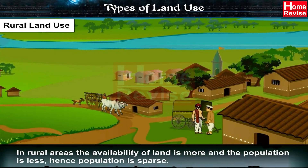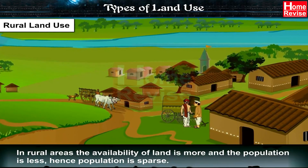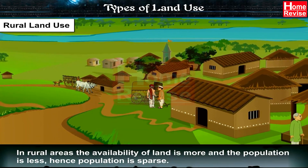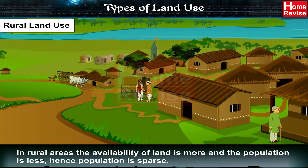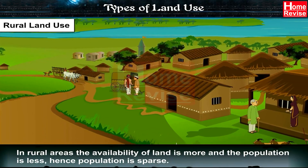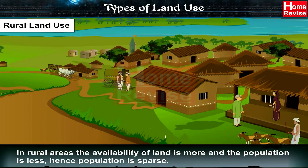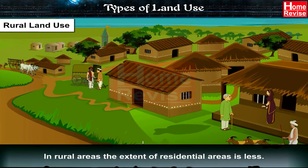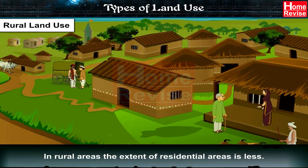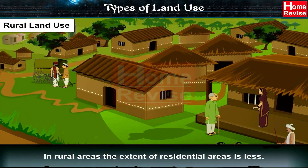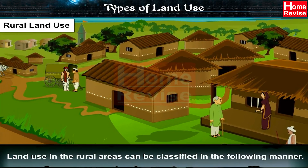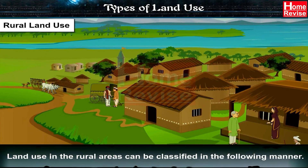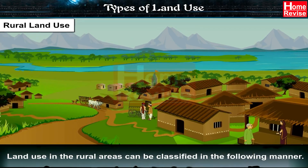In rural areas, the availability of land is more and the population is less. Hence, population is sparse. In rural areas, the extent of residential areas is less. Land use in the rural areas can be classified in the following manner.